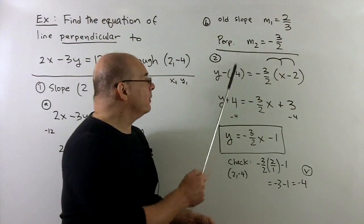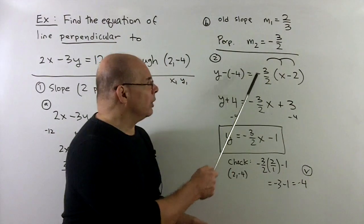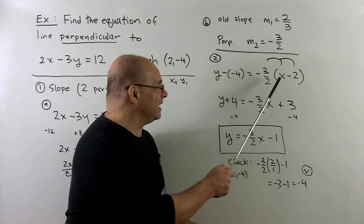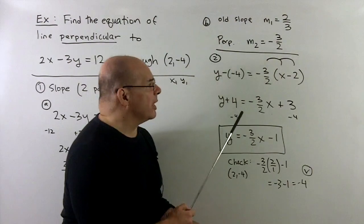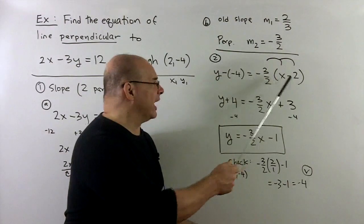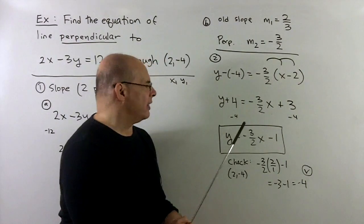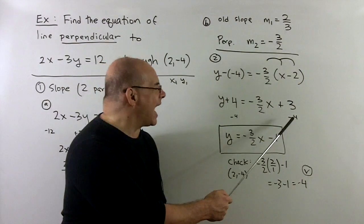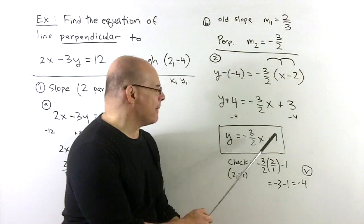So, we'll have, careful bookkeeping, I've got y minus a minus 4 equal to minus 3/2, parentheses, x minus 2. Double negative means we have y plus 4. I distribute the minus 3/2, we get minus 3/2 x plus 3. Then, I want to move the 4 to the other side, giving us y equals minus 3/2 x minus 1.